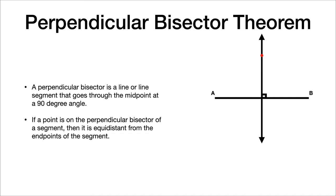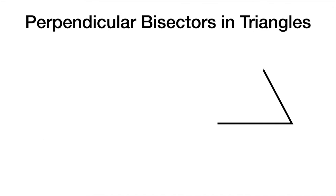If a point is on the perpendicular bisector of a segment, then it is equidistant from the endpoints of the segment. So that was the perpendicular bisector theorem.